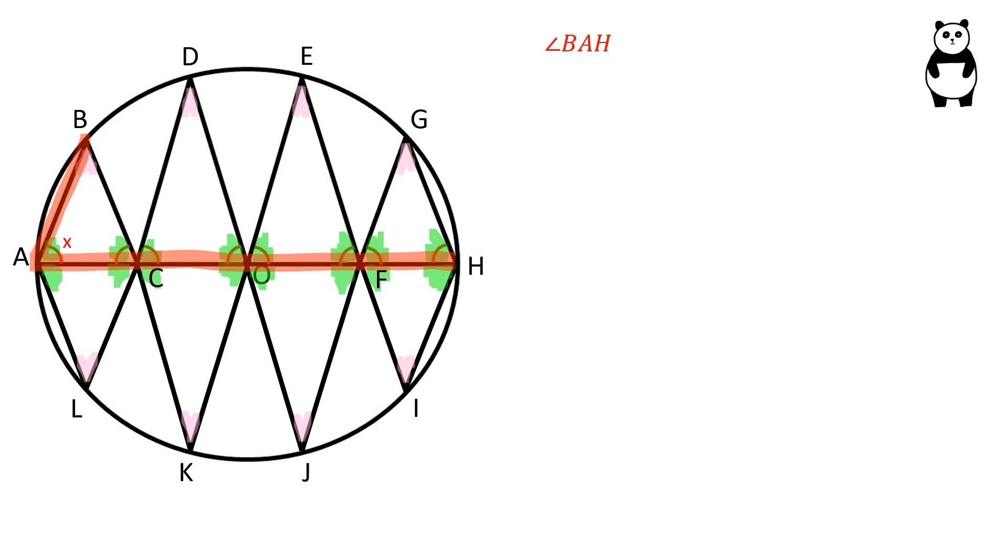Angle BAH is an inscribed angle. The value of an inscribed angle is half the value of the intercepted arc. Angle BAH is half the value of arc BH.